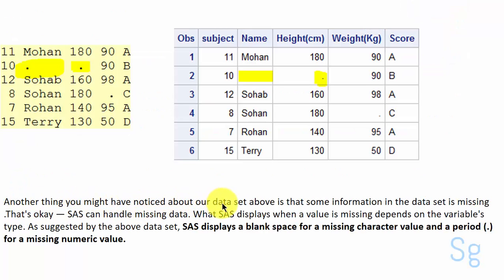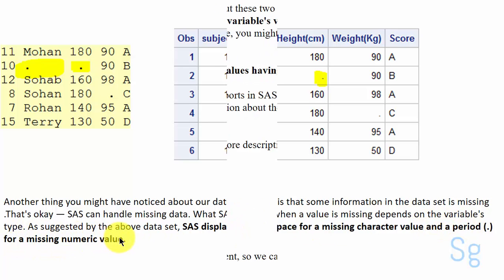Another thing you might have noticed about our data set above is that some information in the data set is missing. That's okay. SAS can handle missing data. What SAS displays when a value is missing depends on the variable's type. As suggested by the above data set, SAS displays a blank space for a missing character value and a period for a missing numeric value.